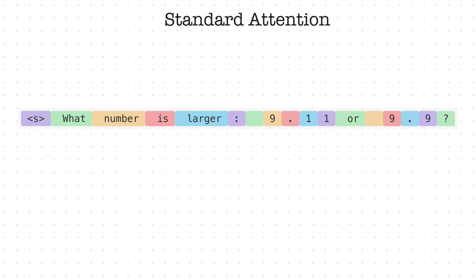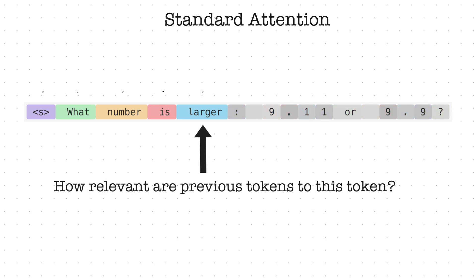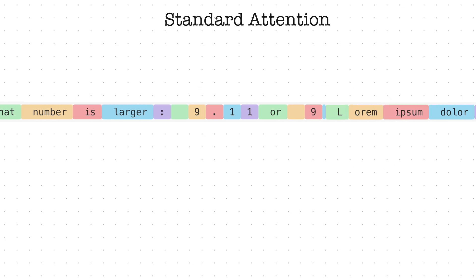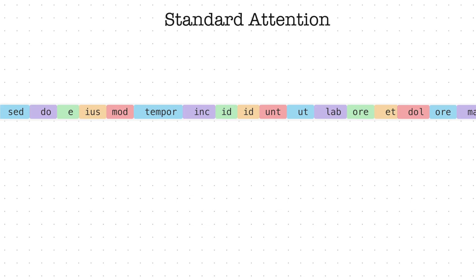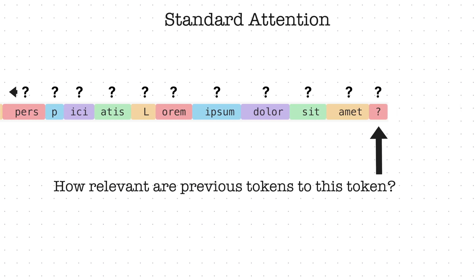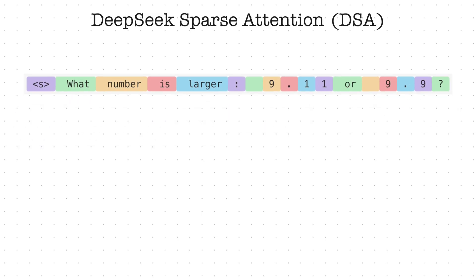In standard attention, like MHA or GQA, you give the model a sequence of tokens and for each token you ask the question: among all previous tokens, how relevant is each one to me? This works well, but you end up asking lots of questions. If your input has a million tokens, you start with very few questions at first, but by the time you get to the end, you're asking a million questions for each token. In this new type of attention, called DeepSeek Sparse Attention or DSA, they basically assume that we don't need to consider every single token every time.